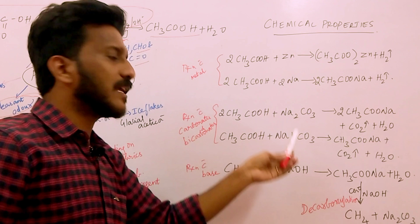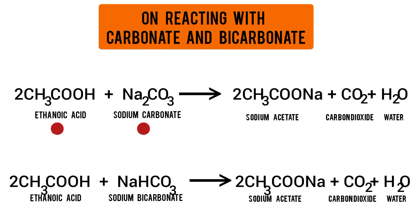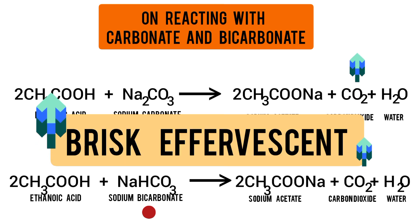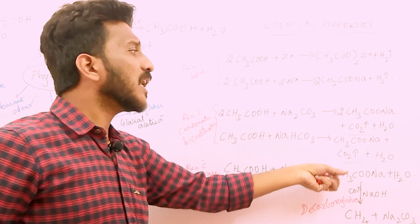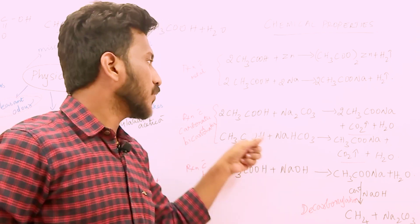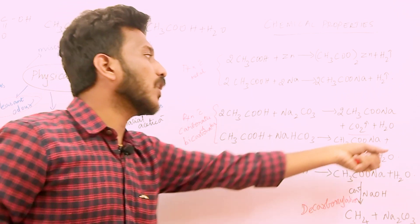In the case of Carbonates and Bicarbonates — Sodium Carbonate and Sodium Bicarbonate: when Ethanoic Acid reacts with Sodium Carbonate, it forms Sodium Acetate. The main concept is Carbon Dioxide release. Whenever you add Ethanoic Acid to Sodium Carbonate or Sodium Bicarbonate, you get brisk effervescence due to Carbon Dioxide gas, along with water.